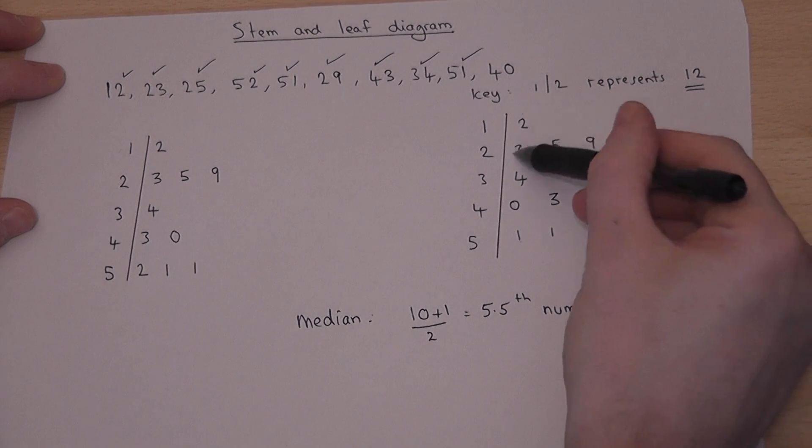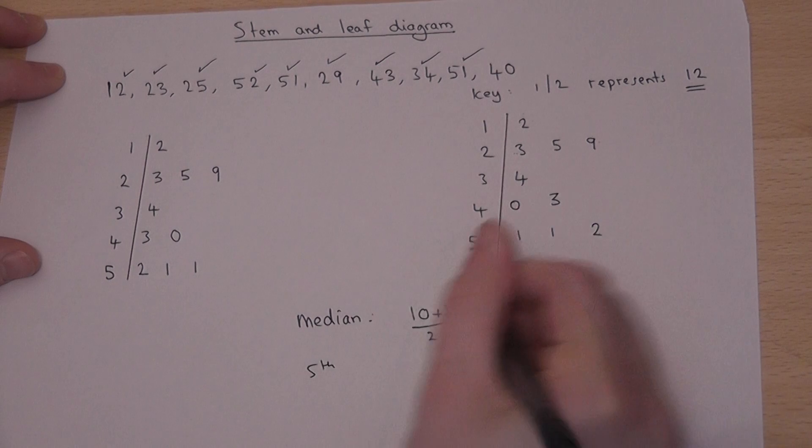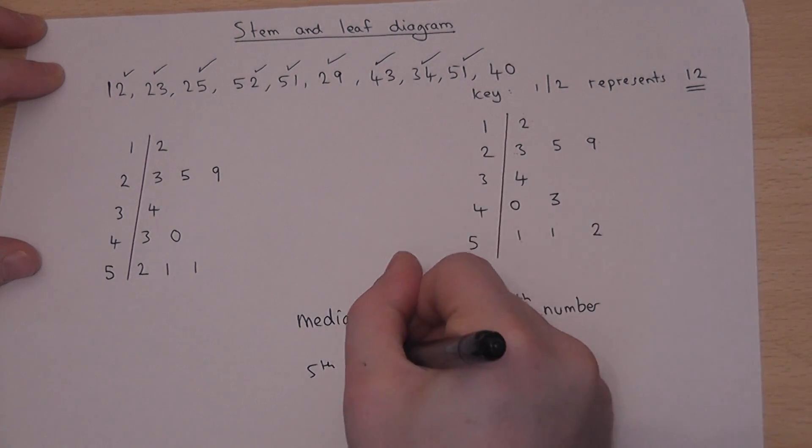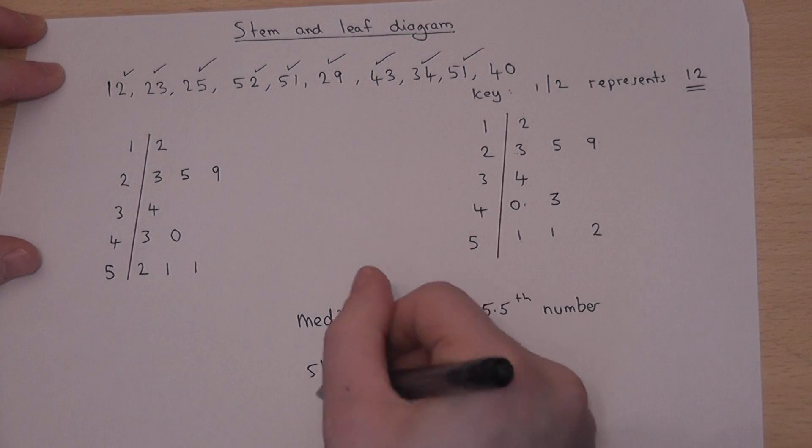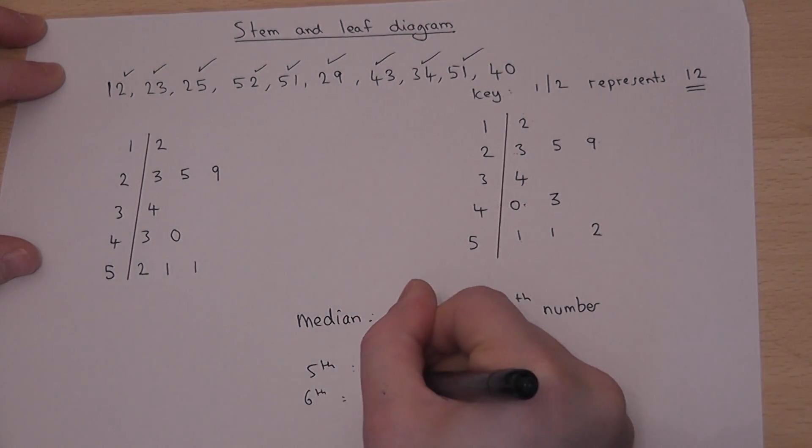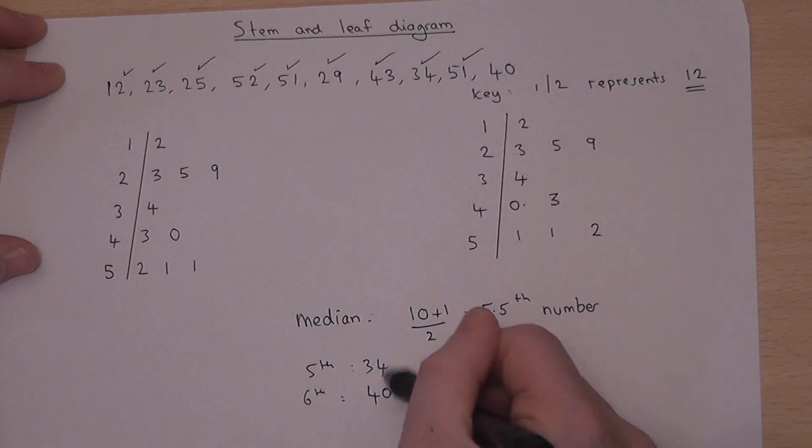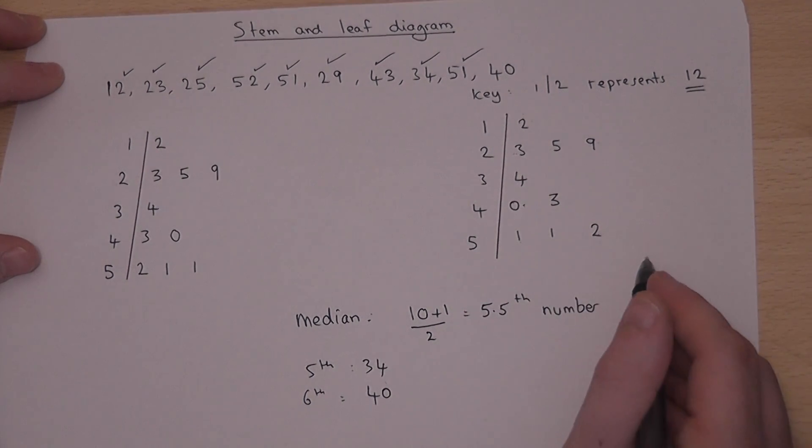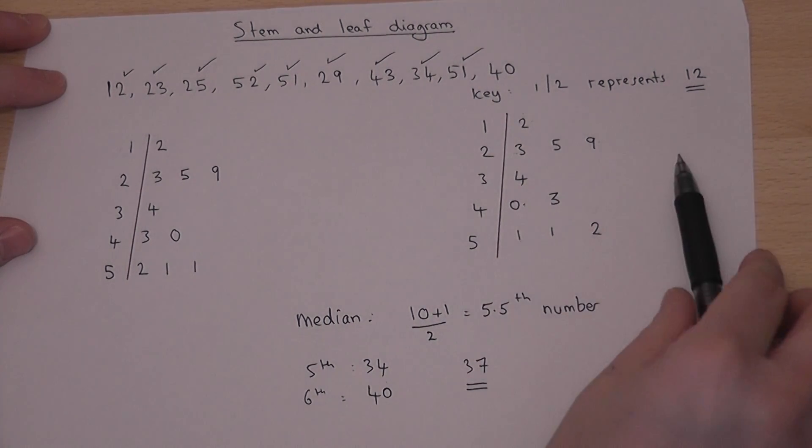So we count up 1, 2, 3, 4, 5. So the fifth number is 34. The sixth, 1, 2, 3, 4, 5, 6, is 40. So the 5.5 number is the one which is between those two. And halfway between 34 and 40 is 37. So the median is 37.